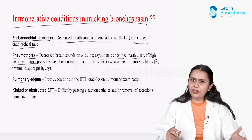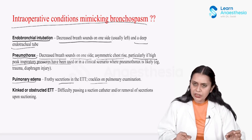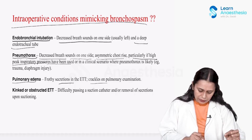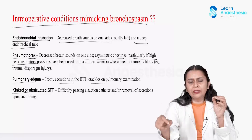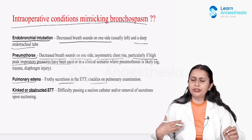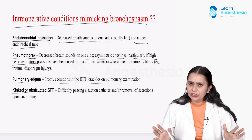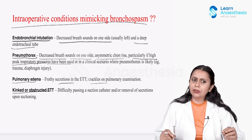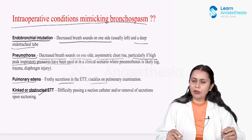Pulmonary edema is differentiated by pink frothy secretions visible in the ETT and crackles on auscultation. A kinked or obstructed ET tube presents with bilateral decreased air entry, decreased saturation, upsloping EtCO2 plateau, and increased airway pressure — similar to bronchospasm. We distinguish it by passing a suction catheter: if it does not go through, obstruction of the ET tube is likely.